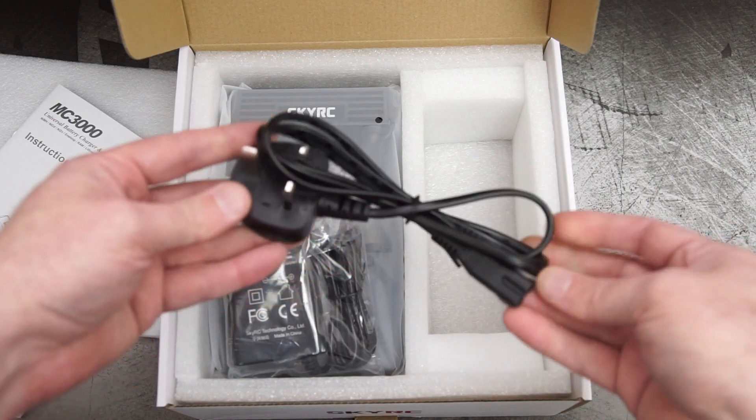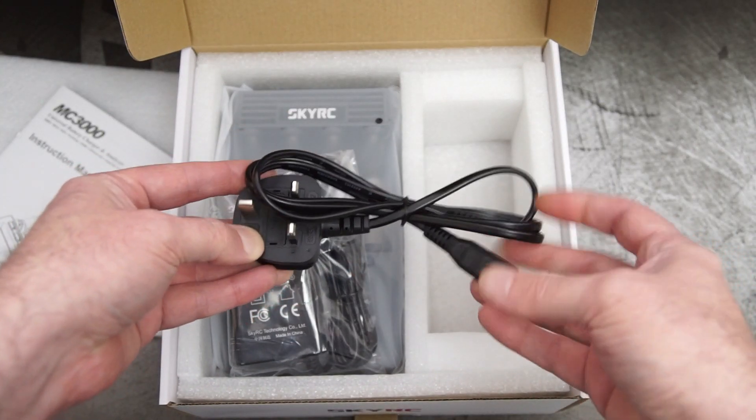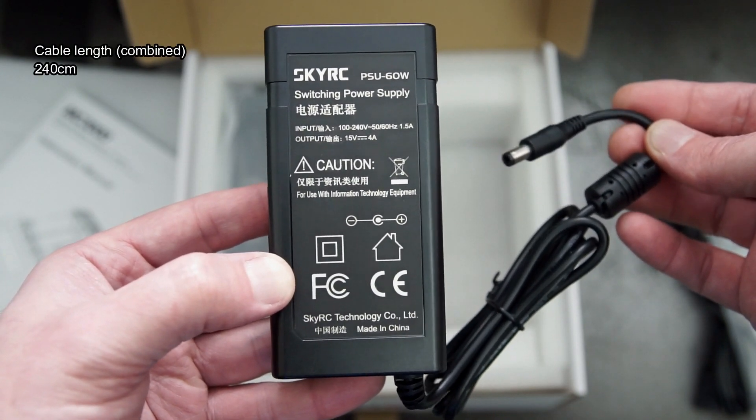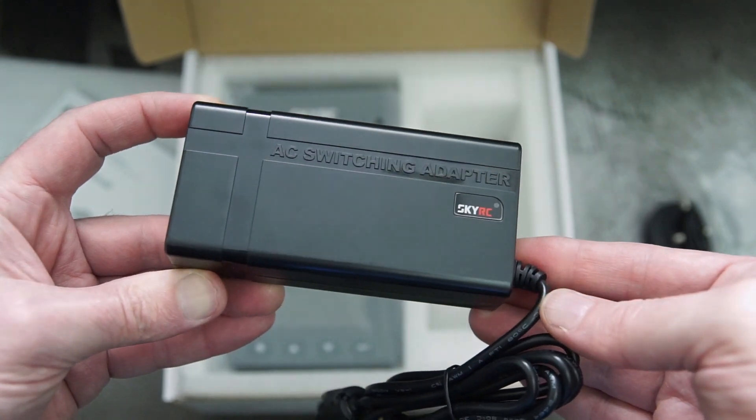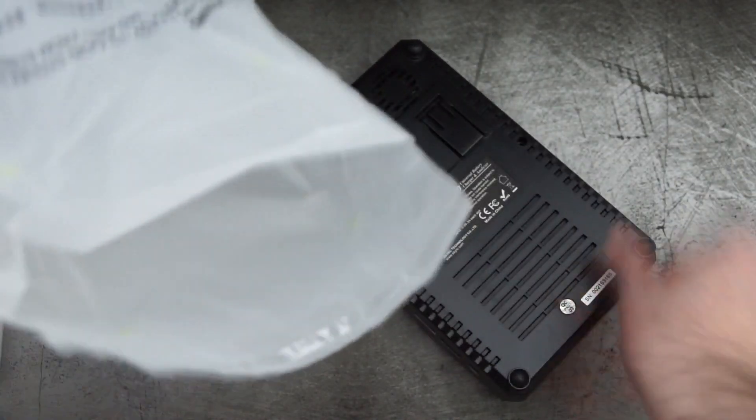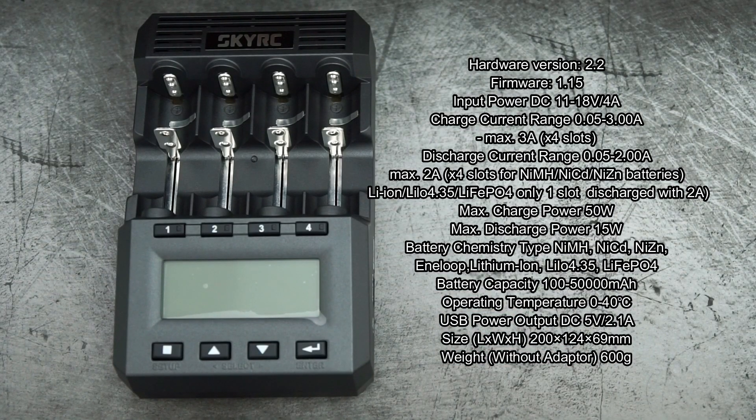There's the charging brick and it's pretty substantial. Total length is around 2.4 meters, that includes the power cable. That's the reason why we can get that fast charging speed, because we've got a pretty meaty power supply. I've put most of the key specs on screen for you.